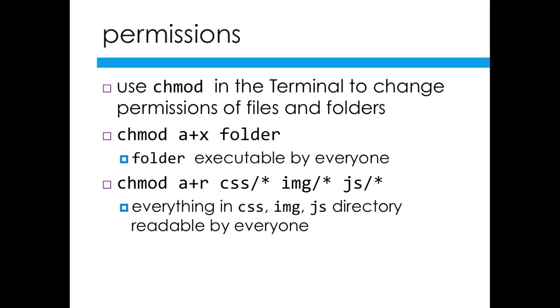When you have a file such as CSS files or image files like JPEGs and bitmaps, or any JavaScript code, you want that to be readable by everyone. Then what you do is you can use the wildcard, which is an asterisk, to basically indicate everything in that folder. You're saying that everything in the CSS folder is going to be readable by everyone.